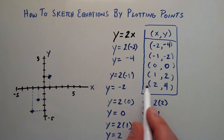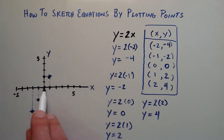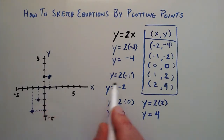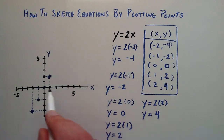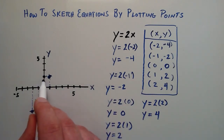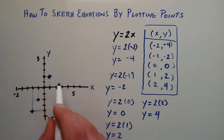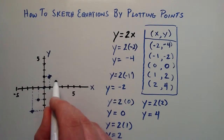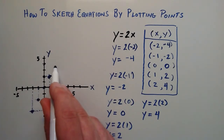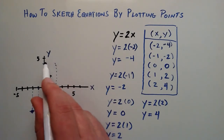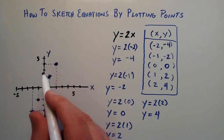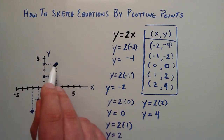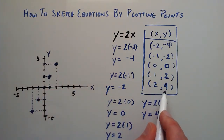For the last point, x is 2 and y is 4. So on the y-axis we go up 1, 2, 3, 4. Drawing our projections once again to find where the point is — this right here is the point 2, 4.